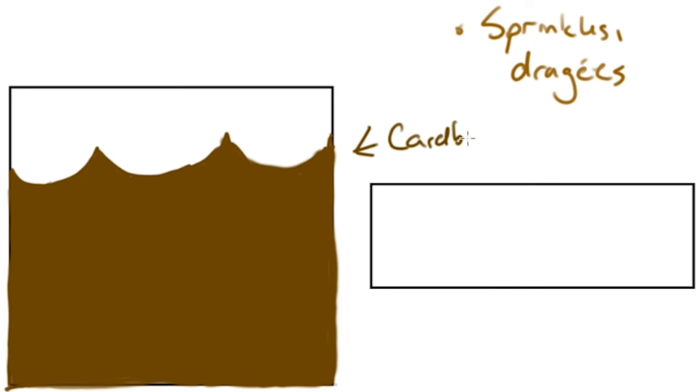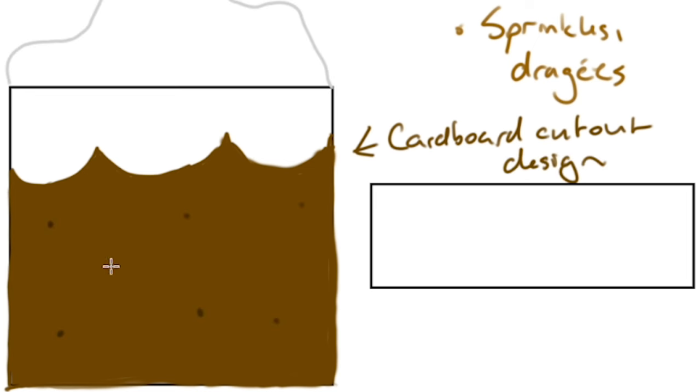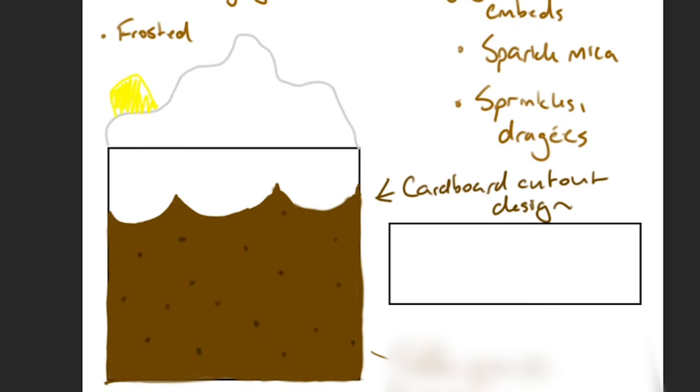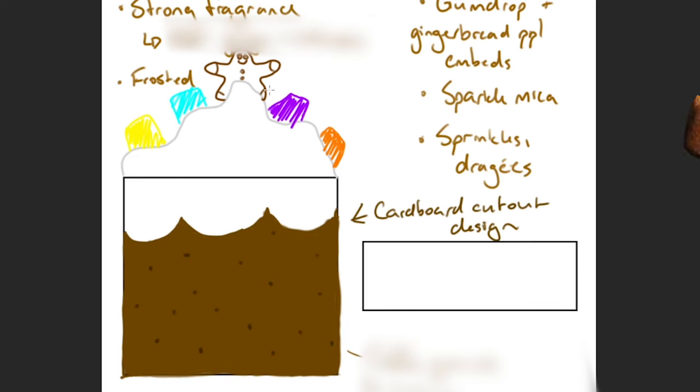I'm gonna DIY a cardboard cutout to get those Batman teeth looking things in the top of the soap to make it really look like frosting oozing over an eaves trough. Now I'm just gonna blur out the last little secret ingredient because you really think I'm gonna give you all the goodies at the start? Just finishing up this little sketch. Let's get going.